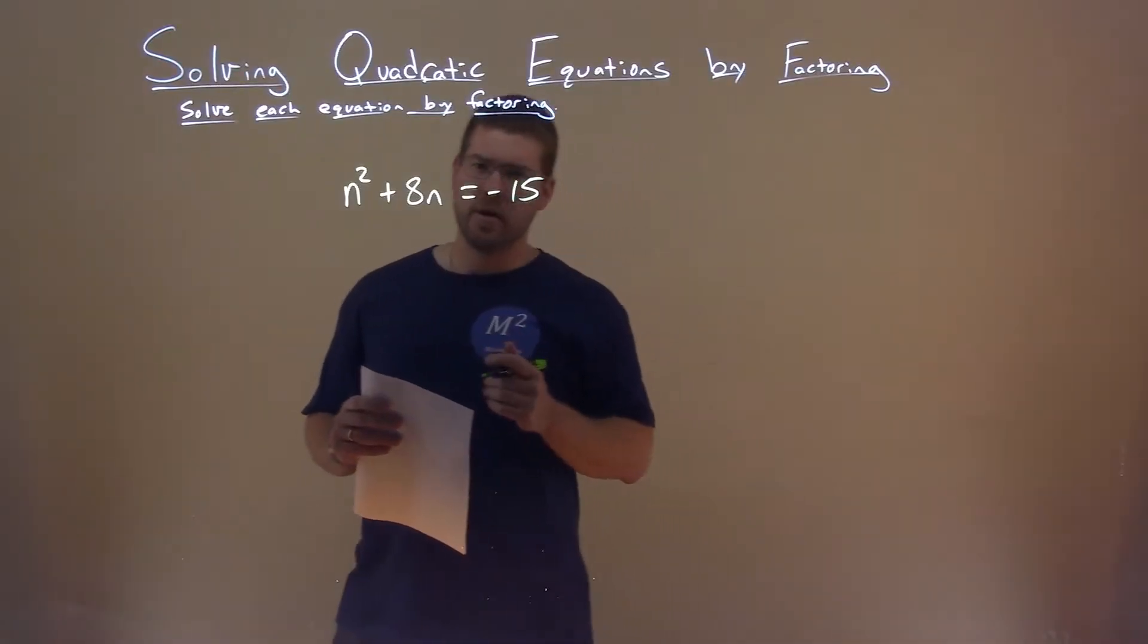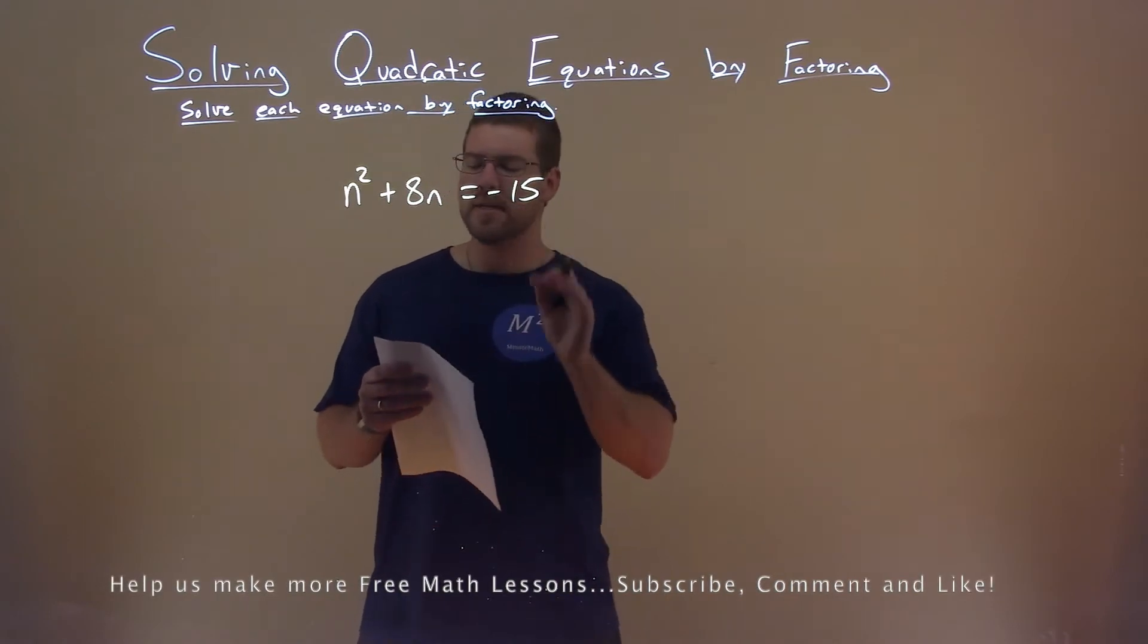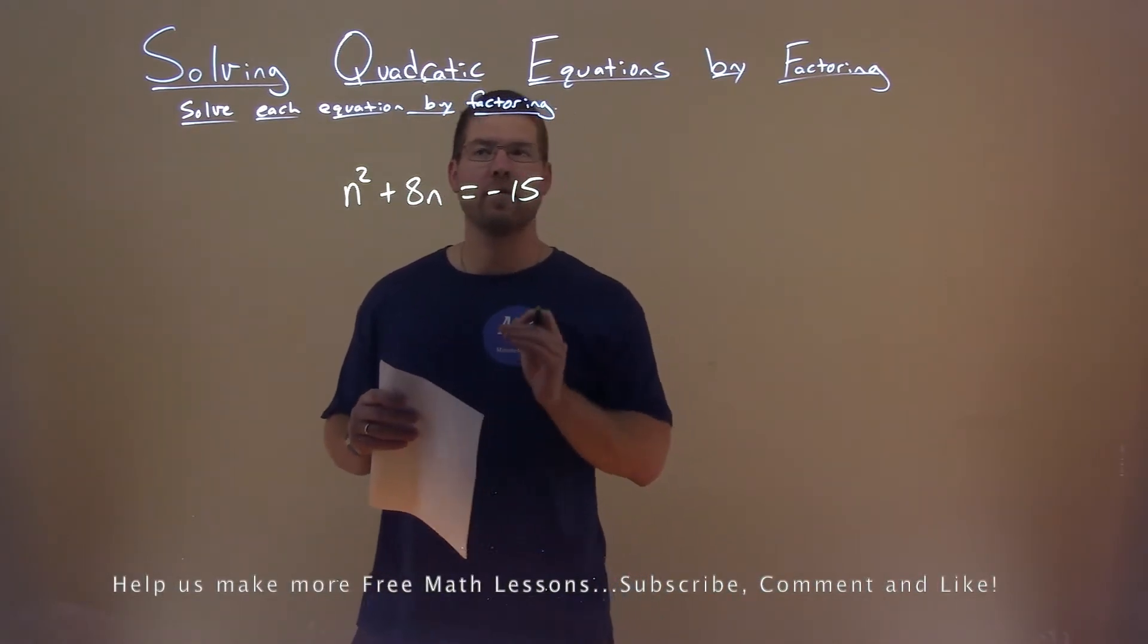We're given this equation here, n squared plus 8n equals negative 15, and we need to solve this by factoring.